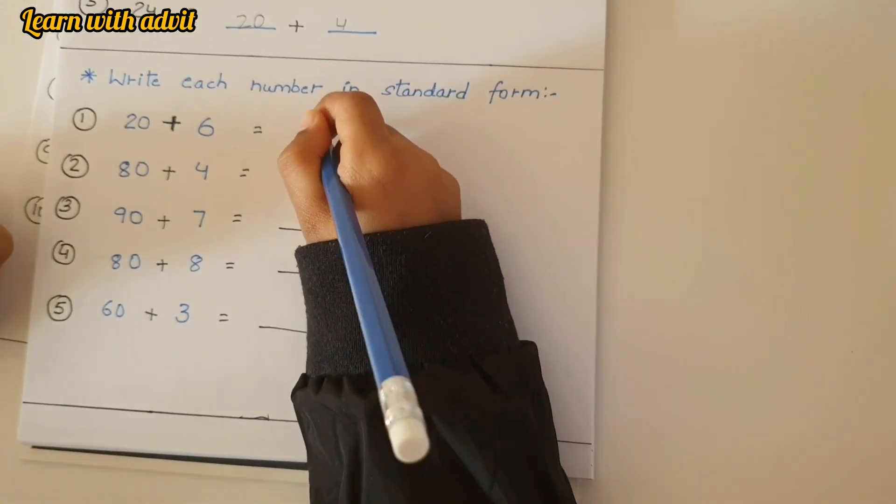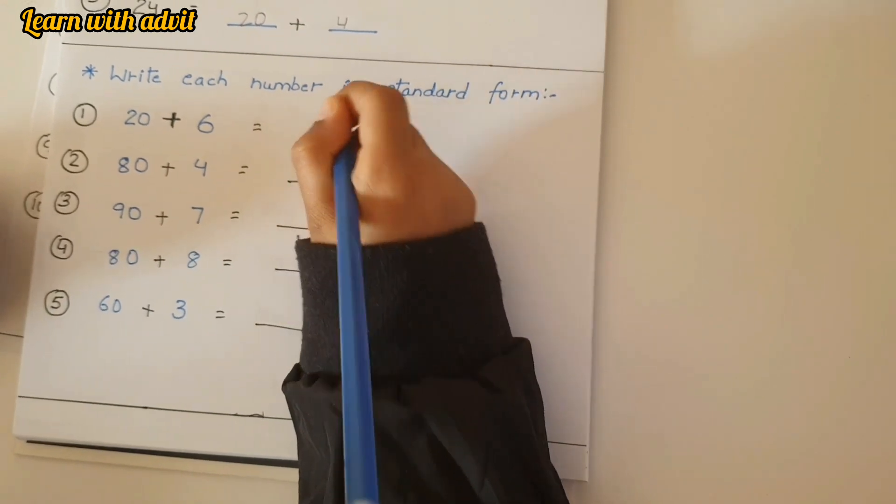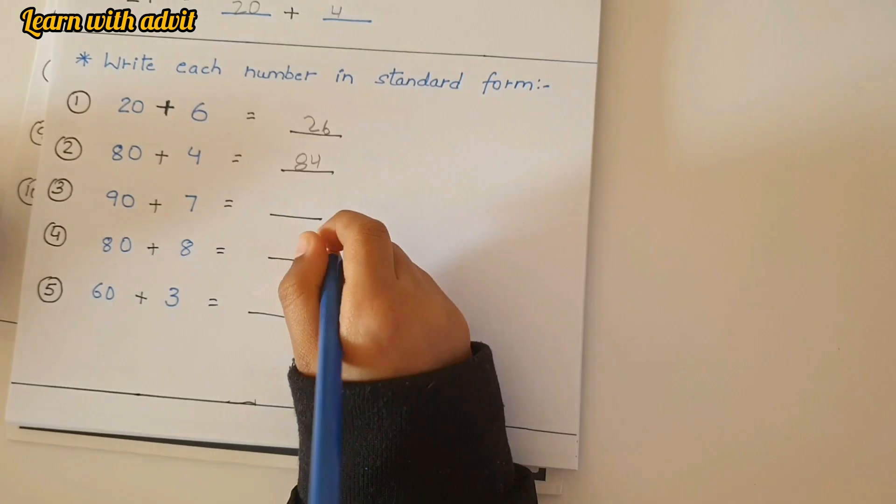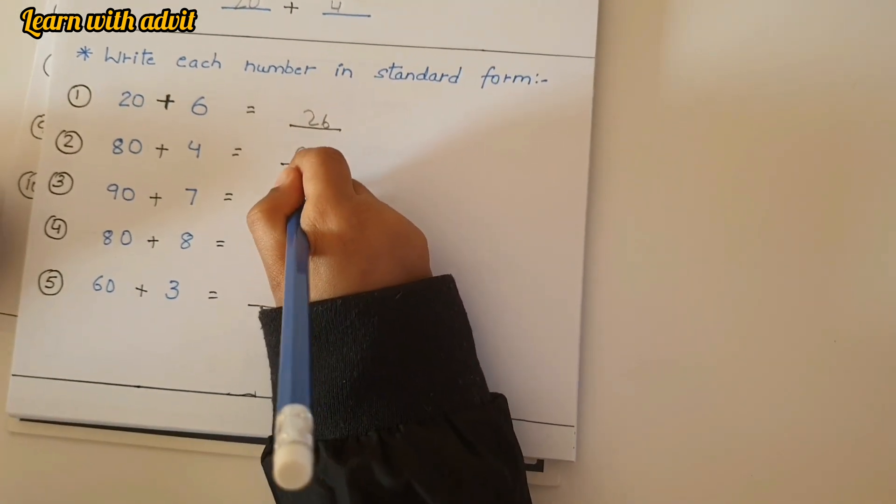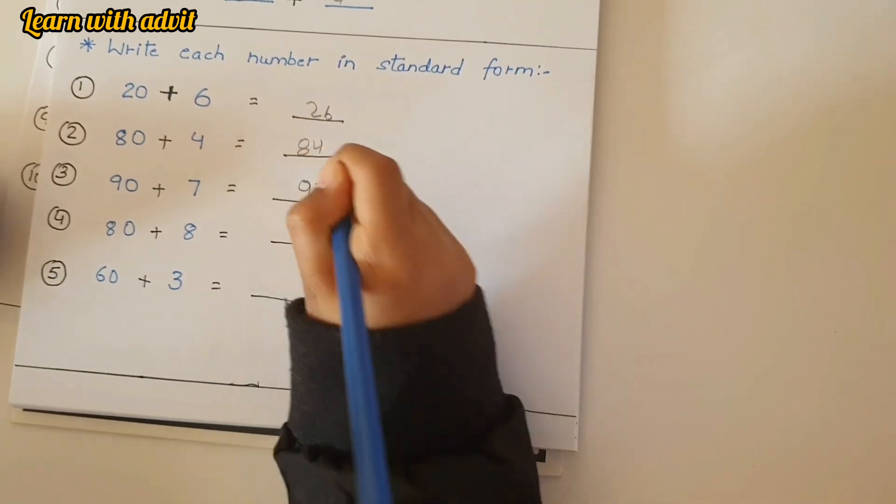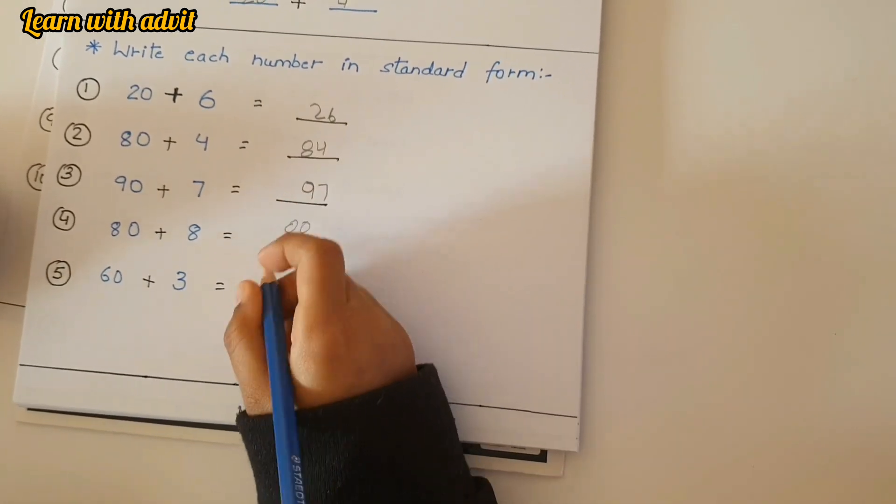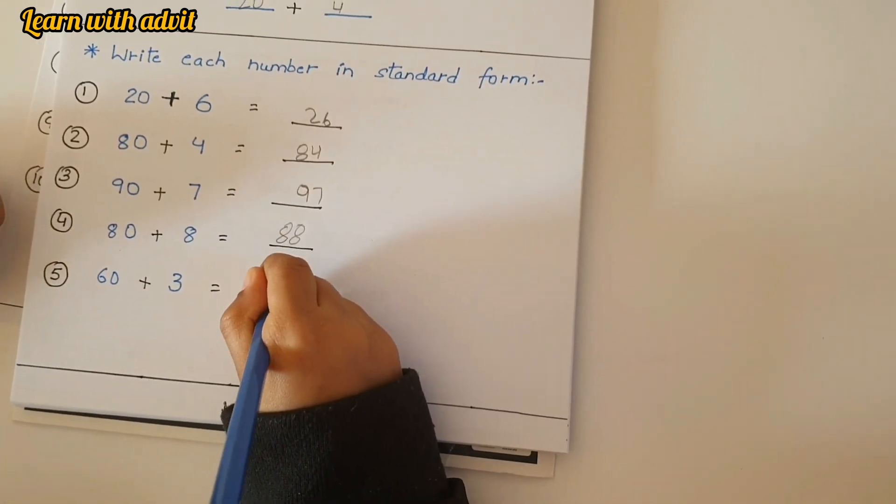Now you have to write it in standard form. Okay, standard form. 20 plus 6, write numbers fast, 26. 80 plus 4, 84. Yeah. 90 plus 7, 97. 80 plus 8, 88. 60 plus 3, 63. Very good.